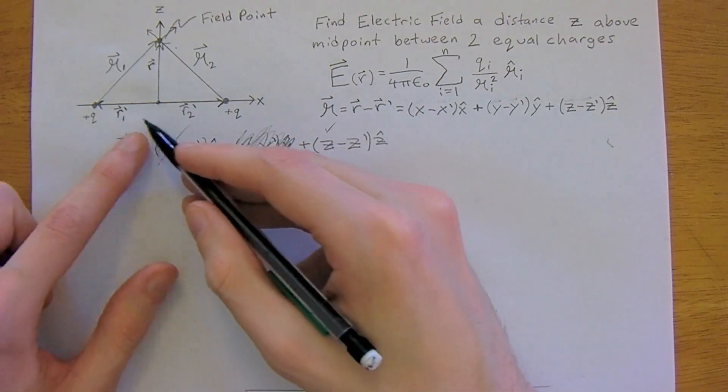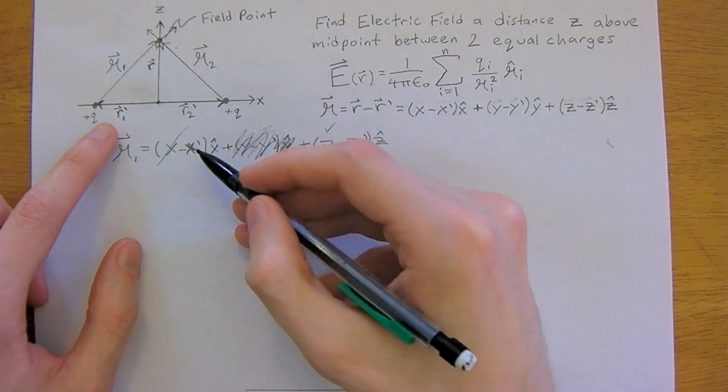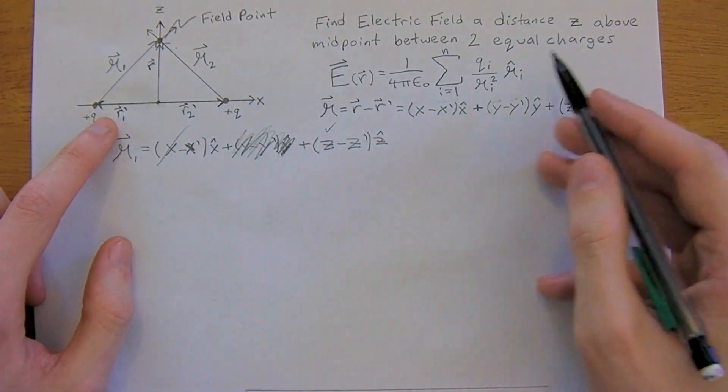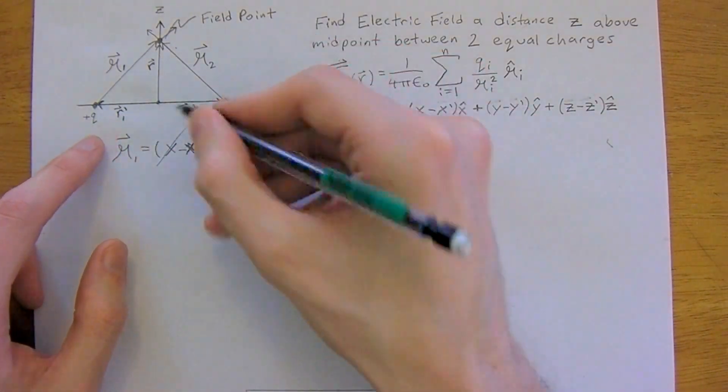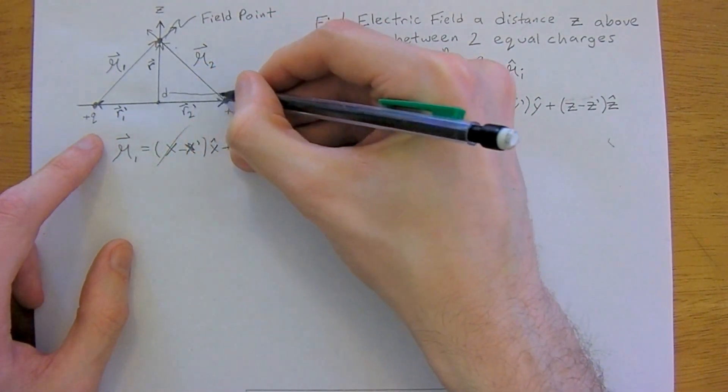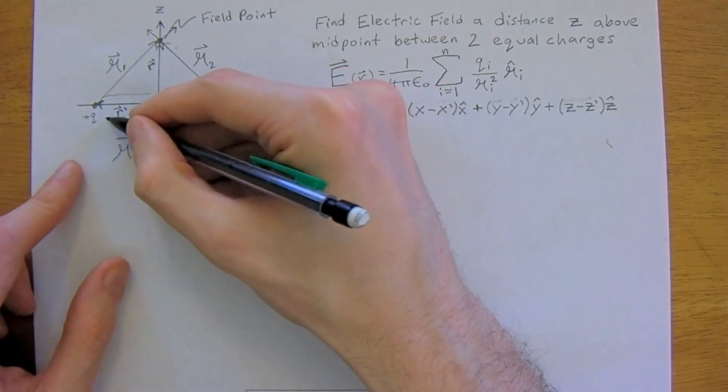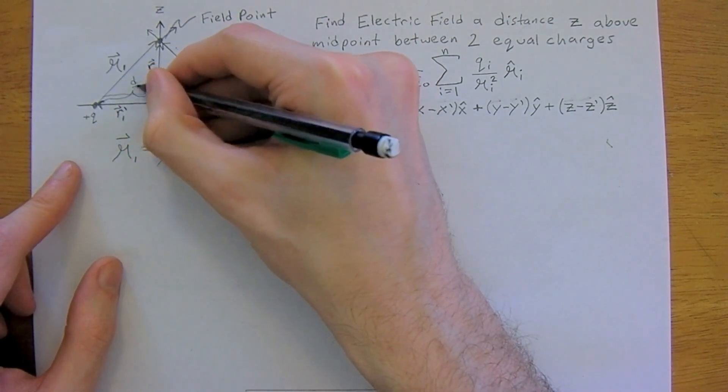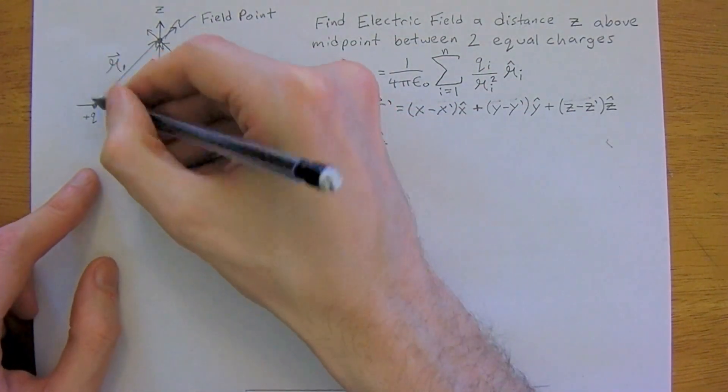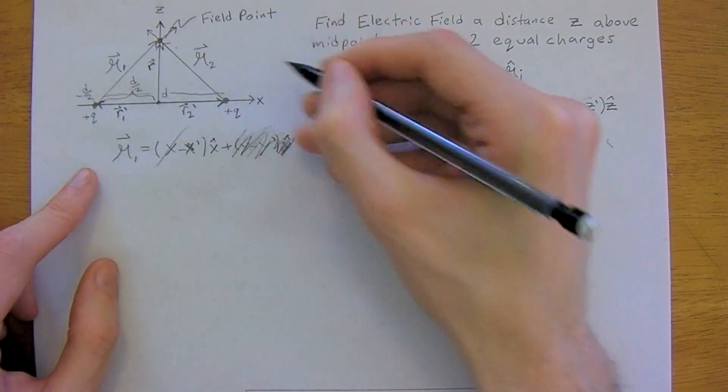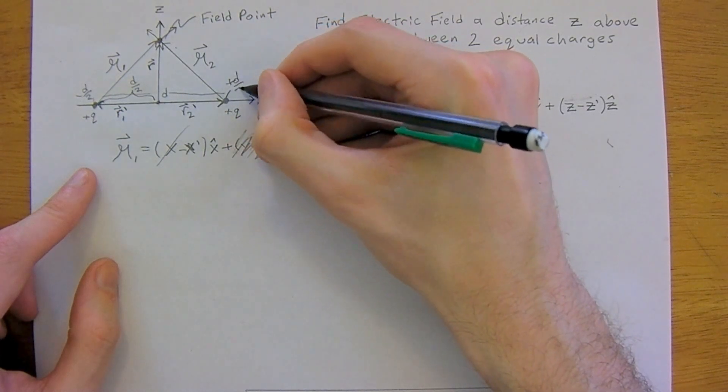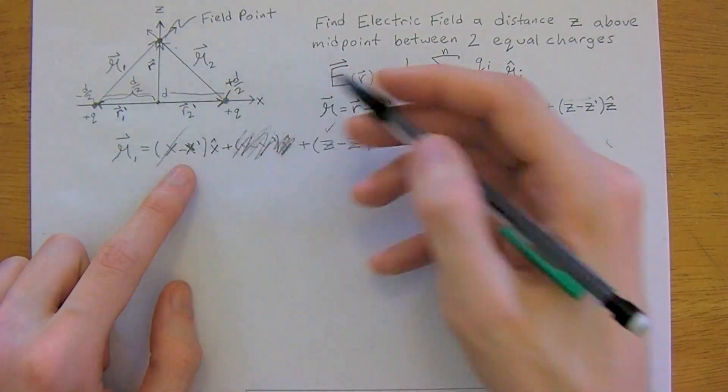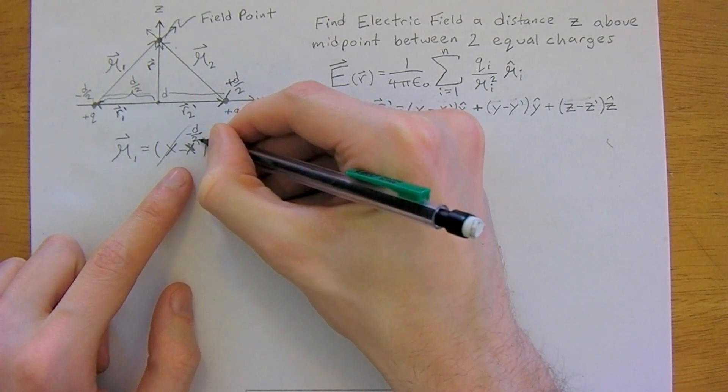Now going to r1 prime, we consider the x. Is there an x component here? There is. And these two, we'll call these two here distance d apart. So d spans this whole way. So that means that half of that distance right here is going to be d over 2. And at this point, we're going to be at negative d over 2. Here, positive d over 2. And so, our x-coordinate is negative d over 2.